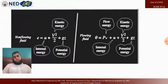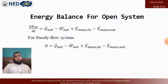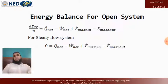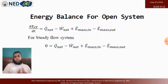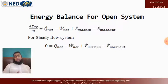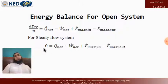We will only solve numericals for steady flow systems because they are much easier than unsteady systems. By applying the steady flow condition, the net energy balance with respect to time becomes zero — the energy is not increasing or decreasing. For example, if 20 kW enters and 20 kW leaves, the net change is zero, making the energy balance manageable.